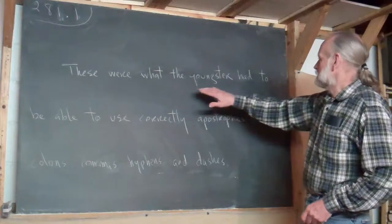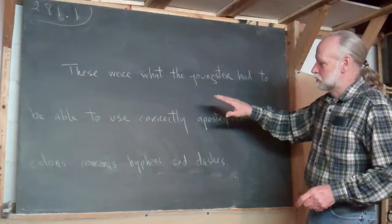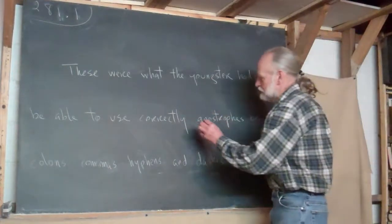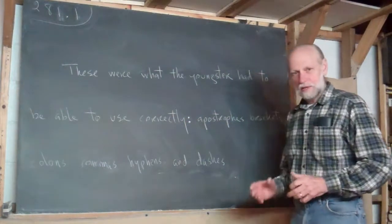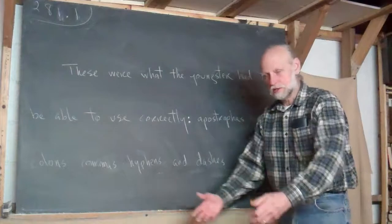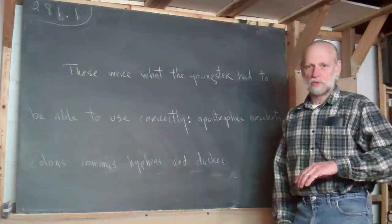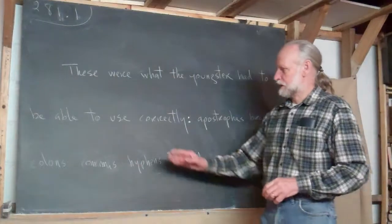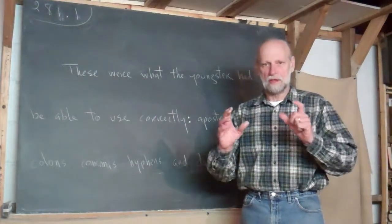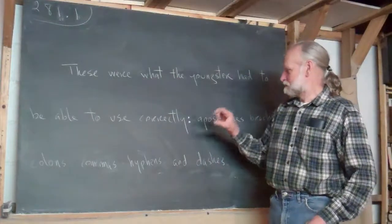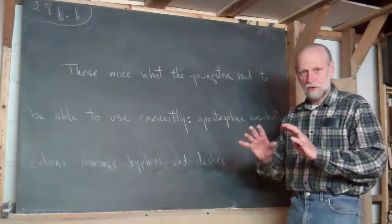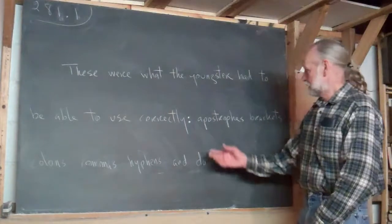These were what the youngster had to be able to use correctly. This calls now for a colon. That's a way of saying here comes a list. It's often used after the words the following. I could say the youngster had to learn the following and then make a colon. So get ready. Here comes a list and then the list.